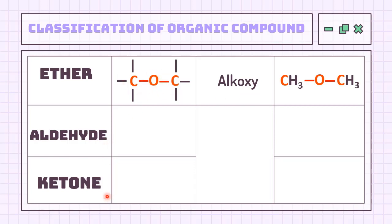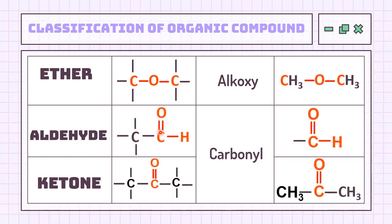Both aldehyde and ketone share the same functional group of carbonyl. Carbonyl structure is basically carbon double bond oxygen (C=O). But what makes aldehyde different from ketone? The aldehyde must have at least one hydrogen attached to the carbonyl group, which means this group can only be present at both ends of a molecule. Meanwhile, ketone does not need this hydrogen, so the carbonyl group in ketone can only be located in between two carbons — meaning this group can only be located somewhere in the middle of a chain.